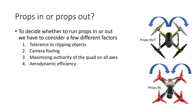So in order to decide whether to run props in or props out we have to consider a balance of a few different factors: the importance of tolerance to clipping objects, camera fouling, maximizing the authority of the quad on all the flight axes, and aerodynamic efficiency. Throughout the rest of this video I'm going to be using this black and yellow quad to represent props out and this black quad with red props to represent props in.